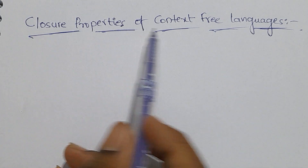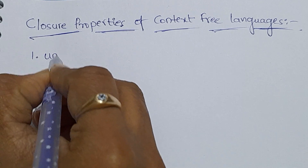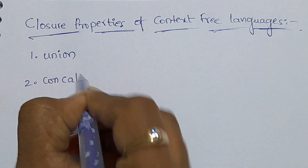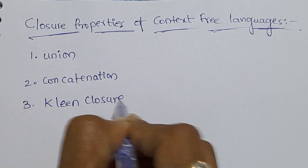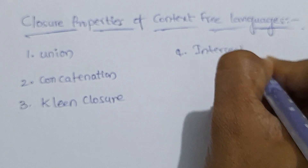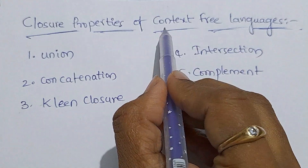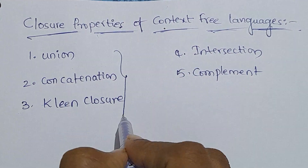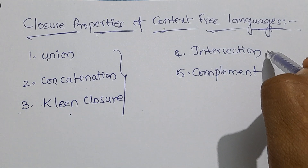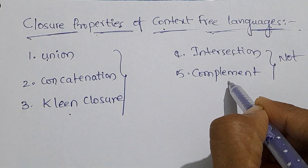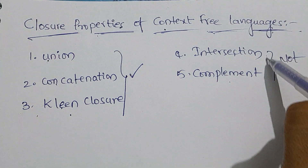We will learn about the closure properties of context-free languages. In total, we have five closure properties. The first one is union, the second one is concatenation, the third one is Kleene closure, the fourth one is intersection, and the fifth one is complement. Context-free languages are closed under union, concatenation, and Kleene closure. Context-free languages are not closed under intersection and complement. Let's see why these three are satisfied and why these two are not.